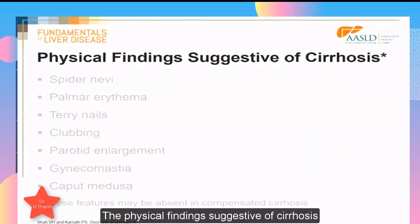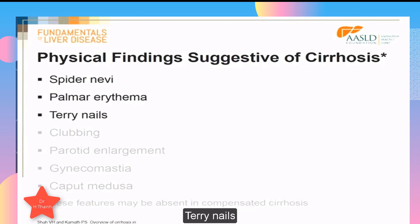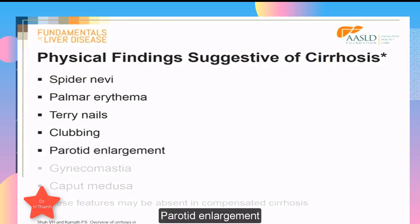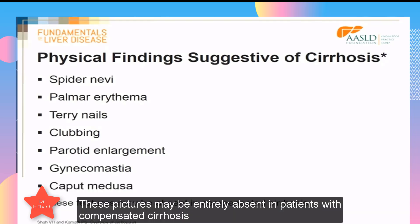The physical findings suggestive of cirrhosis are spider nevi, palmar erythema, Terry nails, clubbing, parotid enlargement, gynecomastia, and caput medusae. These features may be entirely absent in patients with compensated cirrhosis.